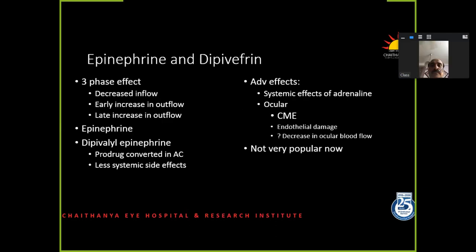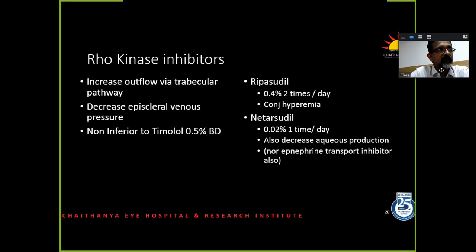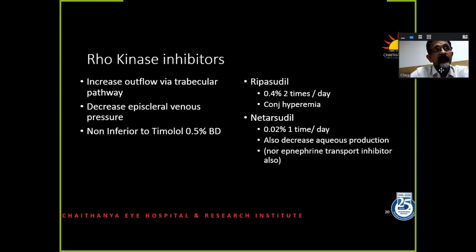Epinephrine and dipivefrin are not really popular anymore. Rho kinase inhibitors are coming in. Though it does work on multiple pathways — it reduces episcleral venous pressure, improves trabecular outflow, and can reduce aqueous inflow a little bit — both these agents have significant conjunctival hyperemia, and quite often they go on to develop almost an allergic conjunctivitis. Quite often we need to stop the drug in about a year or so. It's comparable to alpha agonists in that regard. It is coming into the market and we may have it in Kerala.